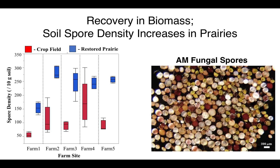On to some results. I found that AM fungi undergoing recovery in prairies had increased substantially in biomass in terms of spore density. Red boxes in this graph represent spore density in crop fields, and blue boxes represent spore density in the adjacent restored prairies. Each segment of the graph represents one farm site, and there is a clear trend of spore recovery at each farm site. Spore density usually tripled in soils of AM fungi undergoing recovery compared to the directly adjacent crop field.